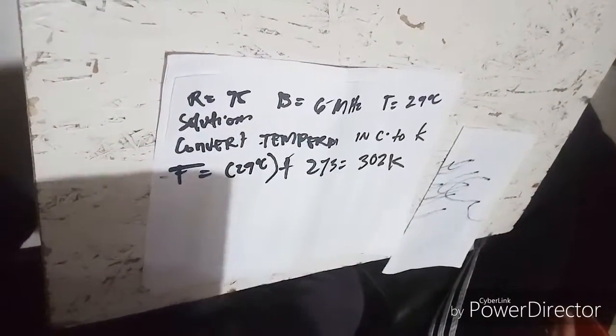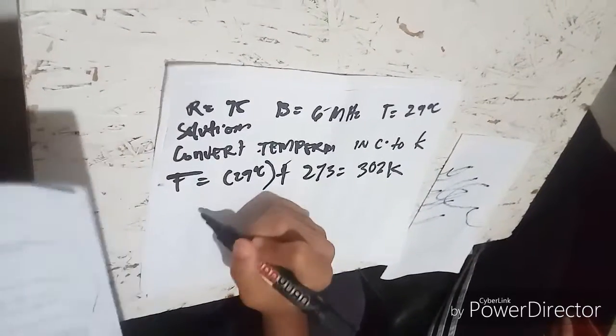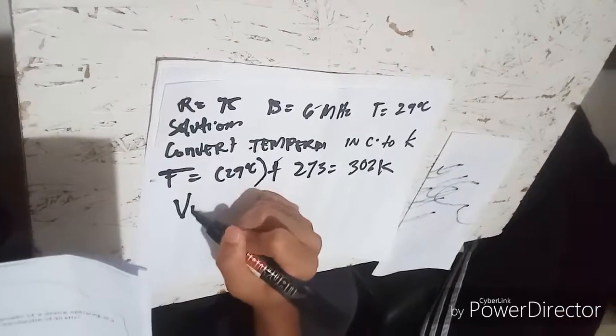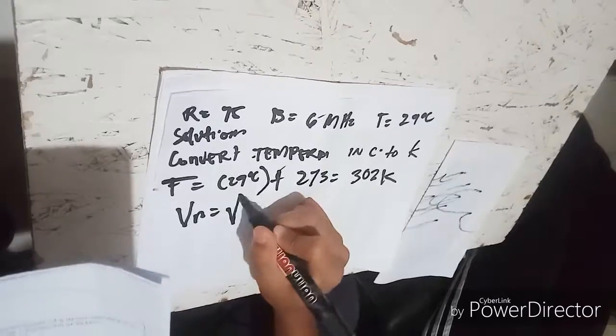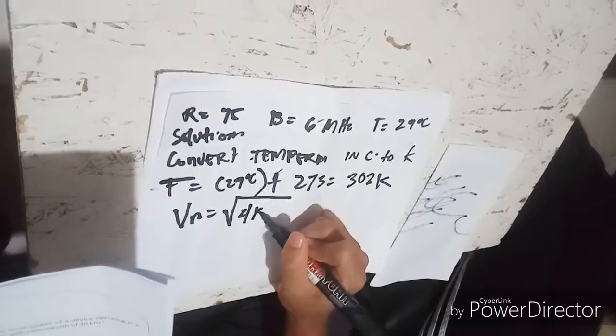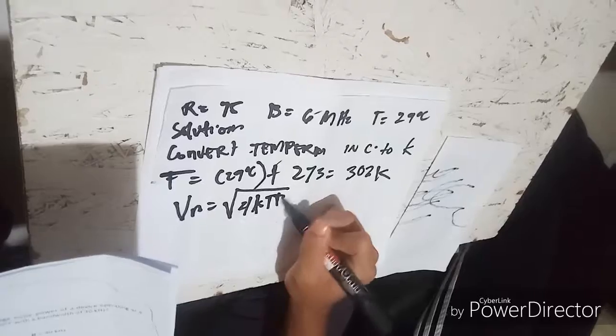So then use Johnson formula. The formula is V_n equals to square root of 4kTBR.